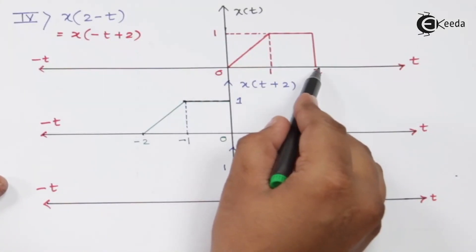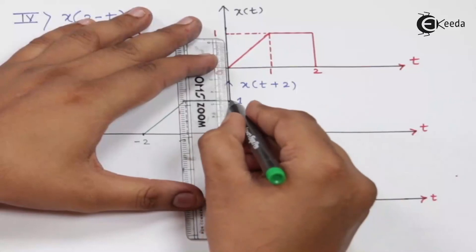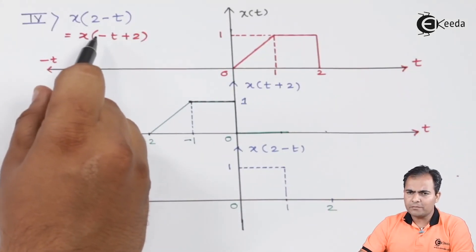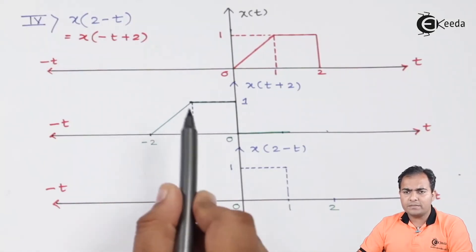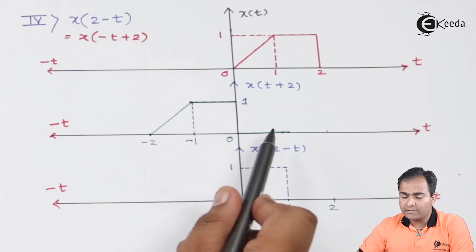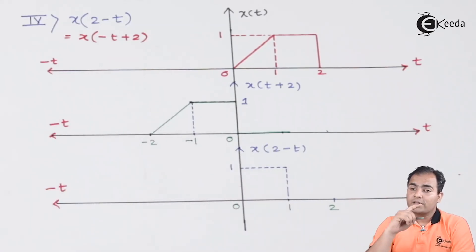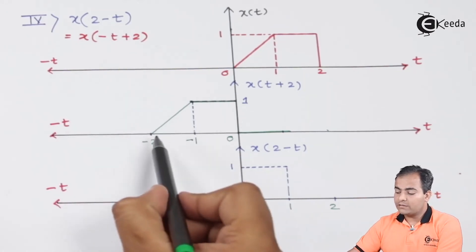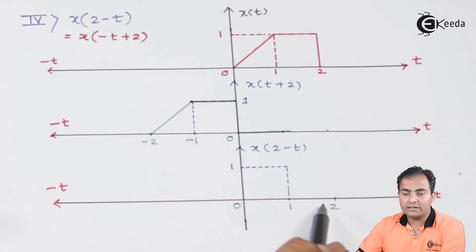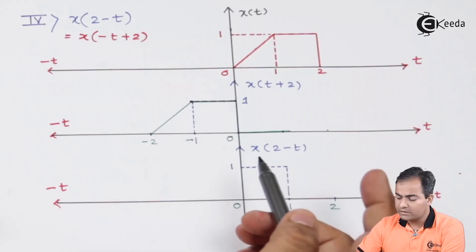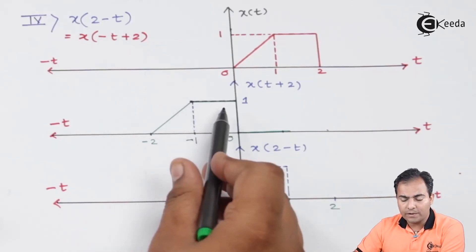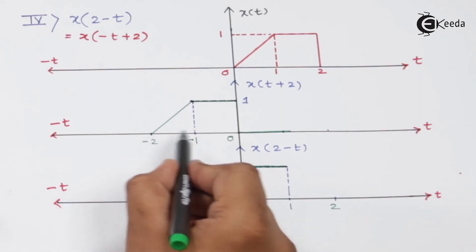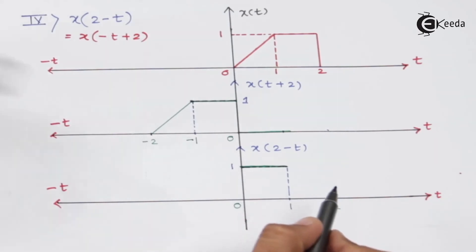After zero the amplitude becomes zero. Now we perform the time folding operation: whatever instances are on the negative side shift to the positive side, and instances on the right shift to the left, but no amplitudes are affected. So minus 2 maps to 2, minus 1 maps to 1, and zero stays at zero. The constant amplitude between minus 1 and zero maps to zero to one; the slope between minus 2 and minus 1 maps to one to two.